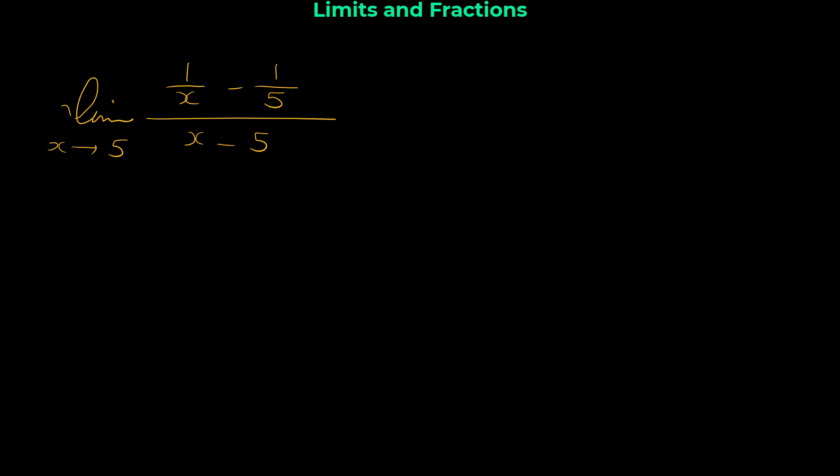For finding a limit the first step is usually to substitute the value that x approaches. So if we plug in 5 for x with direct substitution, we would have 1 over 5 minus 1 over 5, which is 0, and the denominator is also 5 minus 5, which is 0. So direct substitution doesn't help to find this limit.